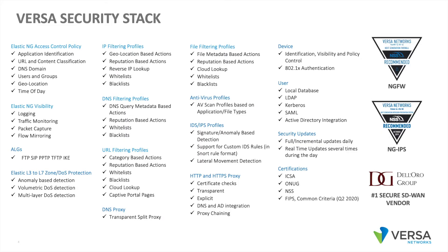Versa has a powerful security stack available in both our cloud gateways and our on-premise secure SD-WAN solution that includes IP filtering, DNS filtering, URL filtering, DNS proxy, file filtering, antivirus, IDS, IPS, HTTP and HTTPS proxy. Versa is NSS Labs recommended for next-gen firewall and next-gen IPS.